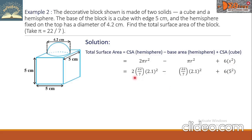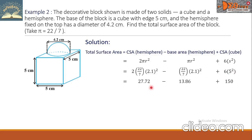Substituting values: 2 × (22/7) × (2.1)² minus (22/7) × (2.1)² plus 6 × 5², since the diameter is 4.2 making the radius 2.1. Simplifying: 27.72 minus 13.86 plus 150, giving a final answer of 163.86 square centimeters.